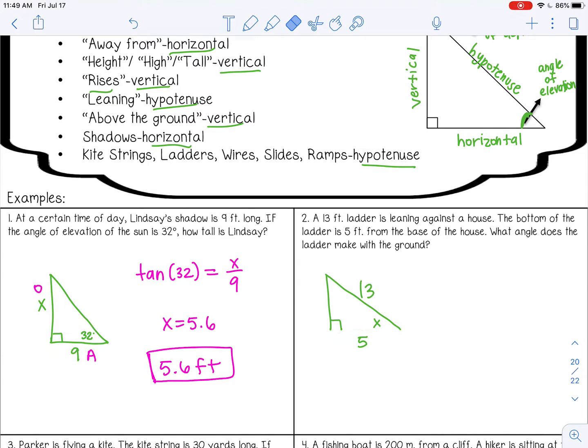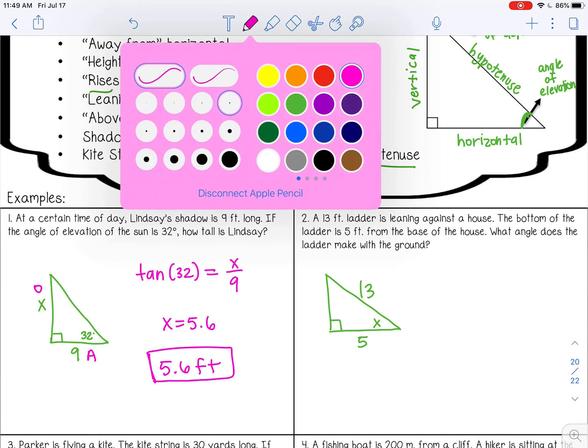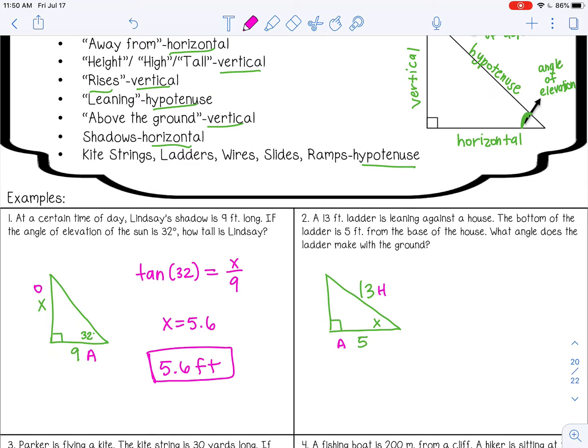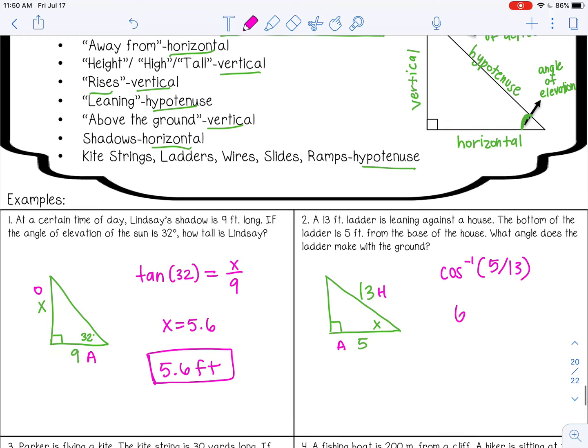So I'm going to label my sides. So adjacent and hypotenuse. That would be cosine. Because we're trying to find an angle, remember we use the inverse cosine. Adjacent over hypotenuse. And that gives me about 67 degrees.